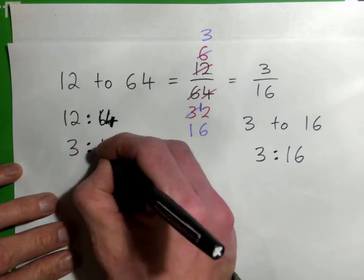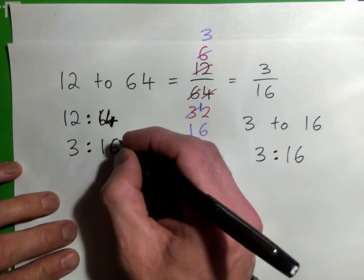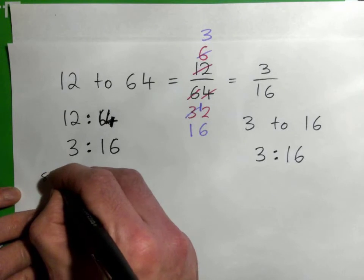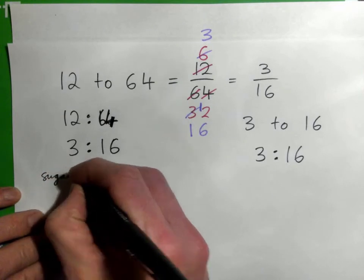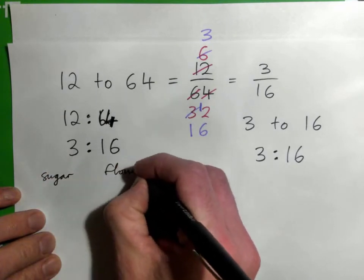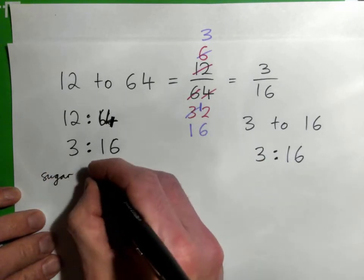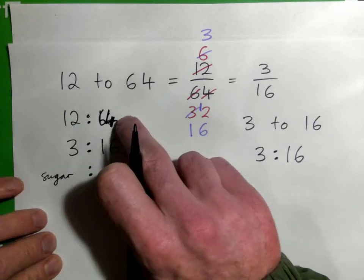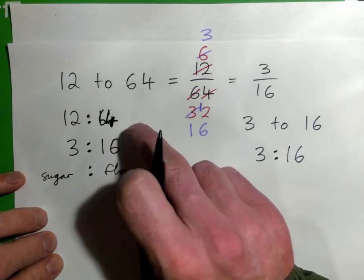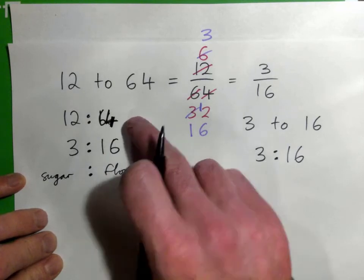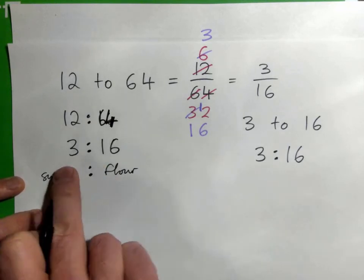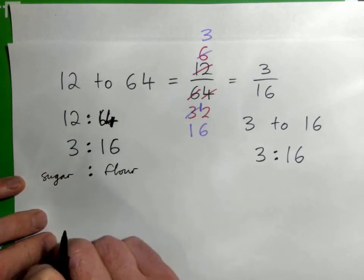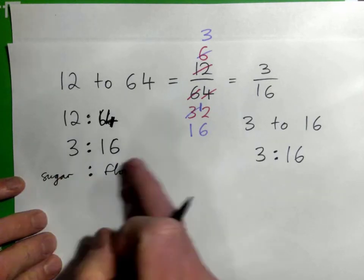What that means is — let's say you're baking, and this is sugar and this is flour. So you're making some type of recipe where 12 cups of sugar with 64 cups of flour is the same thing as doing 3 cups of sugar with 16 cups of flour. Make sense? So that's what a ratio is.